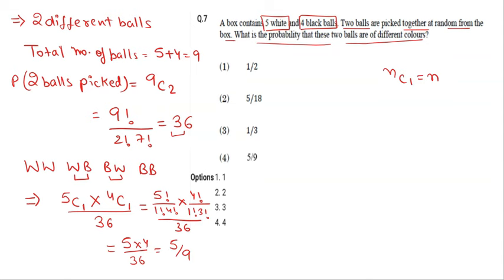And if same color, then it will be either 5C2 plus 4C2, divided by 11C2... wait, divided by 36.